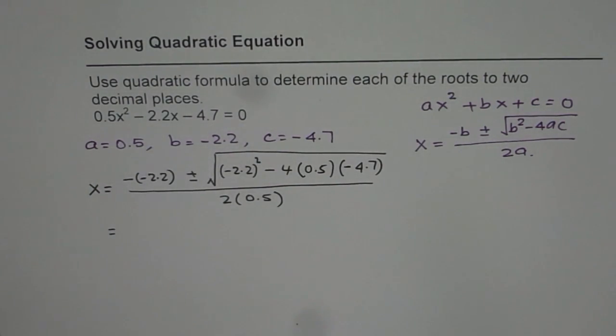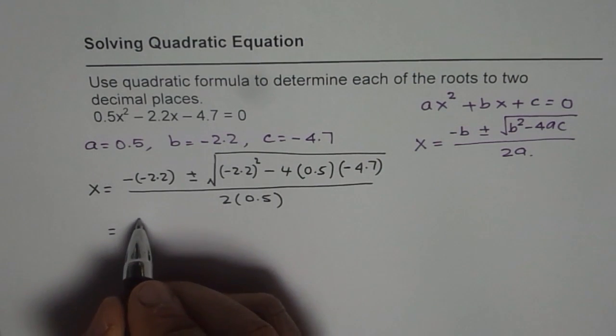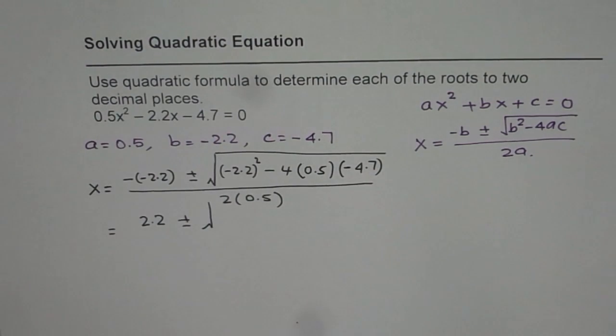That is how you apply quadratic formula. Now let us simplify. Minus minus is plus, we get 2.2 plus and minus square root of 2.2 square.